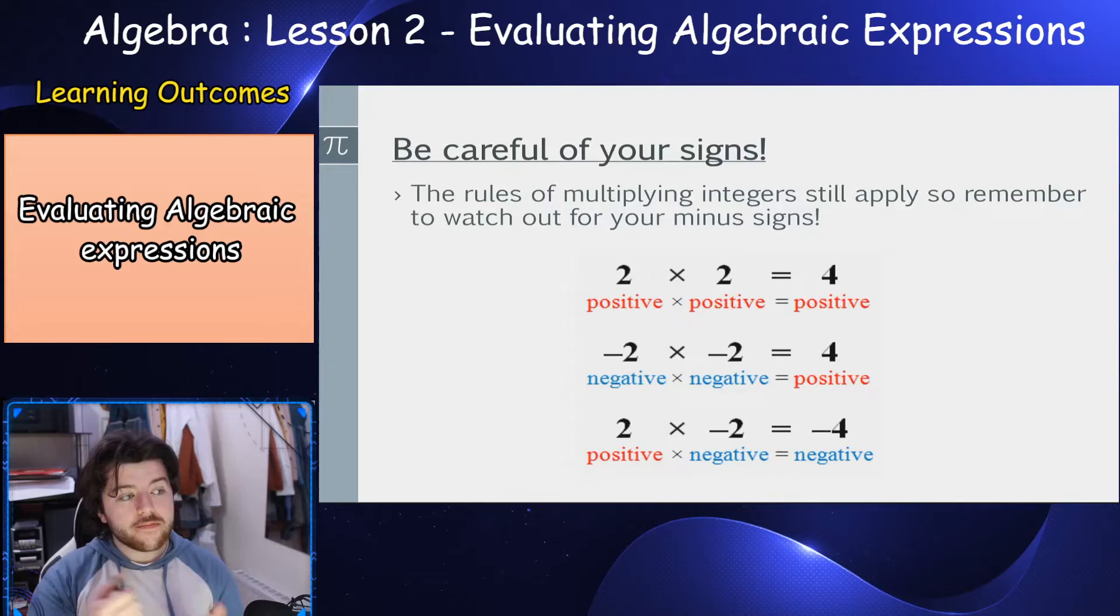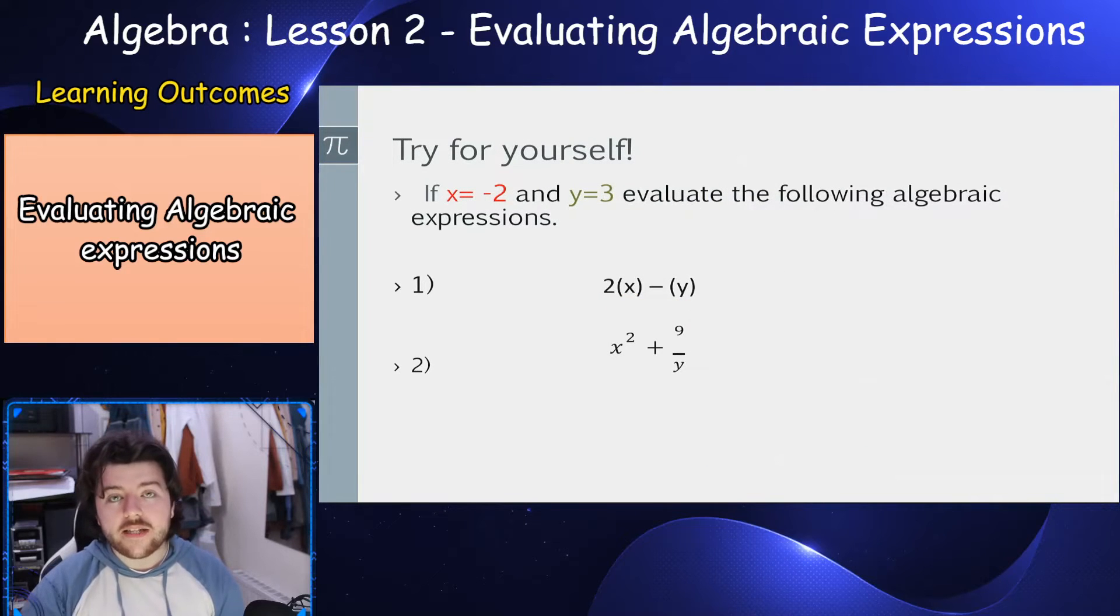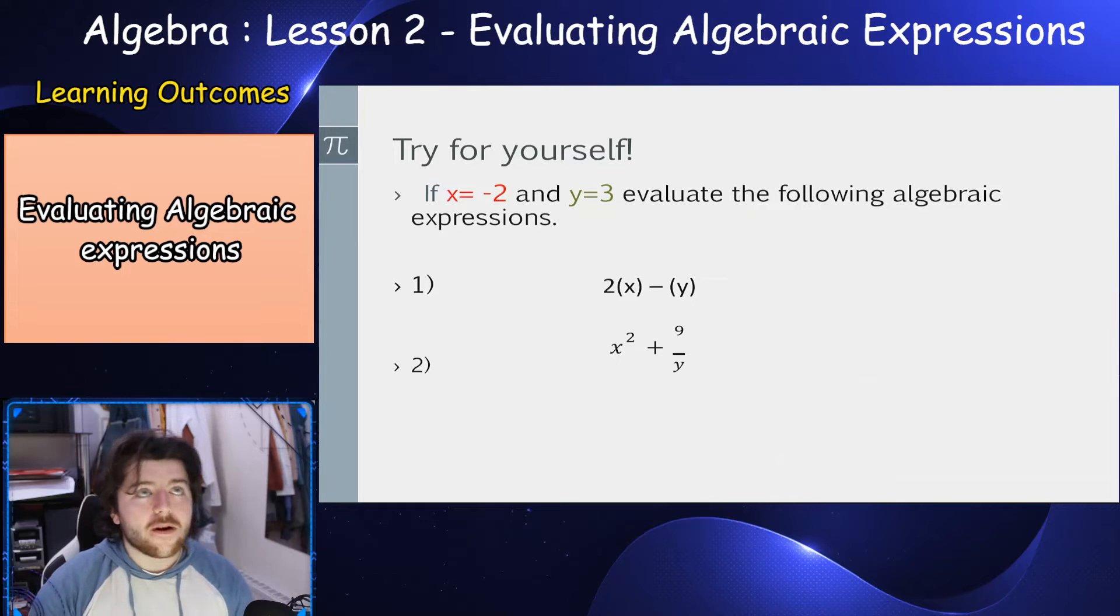So try these for yourself. I'll give you a few minutes or however long you need to take. If x is equal to minus 2 and y is equal to 3, evaluate the following algebraic expressions. The first example is 2x minus y, and the second example is x squared plus 9 divided by y.